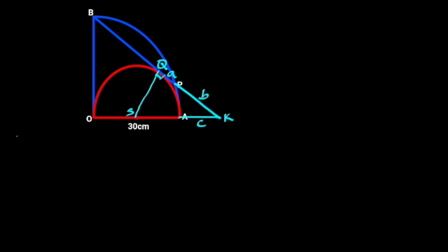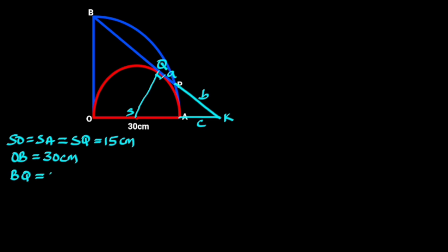From the figure, SO equals SA, which equals SQ, which is equal to 15 cm — the radius of the semicircle. OB is equal to 30 cm, which is the radius of the quarter circle. BQ equals OB, which is 30 cm; reason: both are tangents from B, and tangents drawn from an external point are equal.